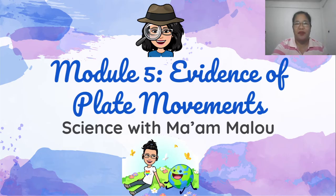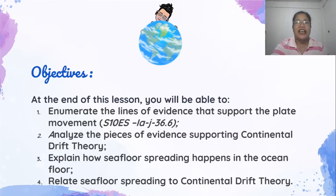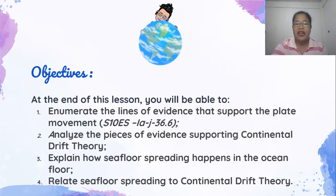Module number 5 is entitled Evidence of Plate Movements. At the end of this module, you will be able to: enumerate the lines of evidence that support the plate movement; analyze the pieces of evidence supporting continental drift theory; explain how seafloor spreading happens in the ocean floor; and relate seafloor spreading to continental drift theory.